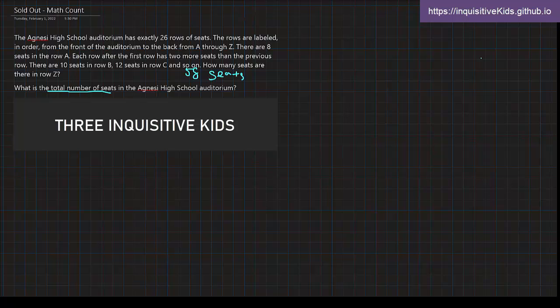So, this isn't asking for the, for example, how many seats are in row Z anymore. It's asking for the total number. Which means we're going to be using addition. But, there's so many rows. How do we, are you just going to, like, stack them, you know, use traditional algorithm and add them? Or is there a smarter way?